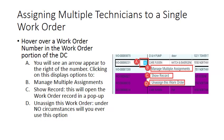We will now review the process of assigning multiple technicians to a single work order. Hover over a work order number in the work order portion of the dispatch console. You will see an arrow appear to the right of the number. Clicking on this displays the options to: B. Manage Multiple Assignments, C. Show Record — this will open the work order record in a pop-up window, and D. Unassign This Work Order — do not use this choice under any circumstance.